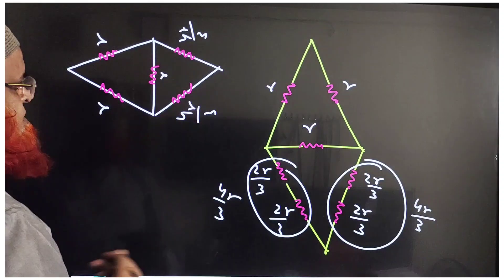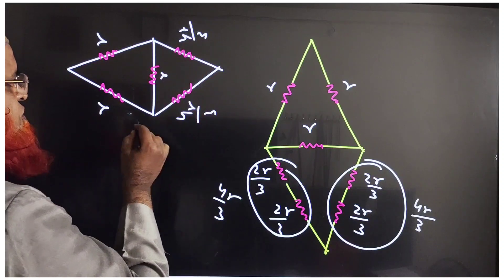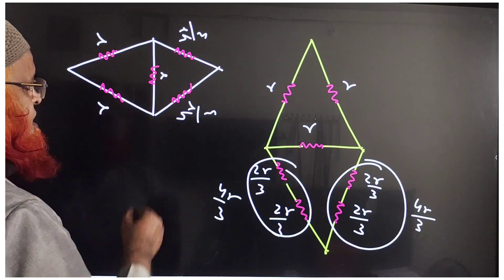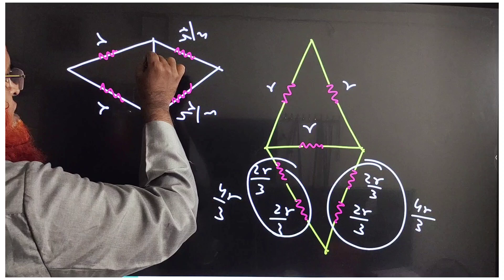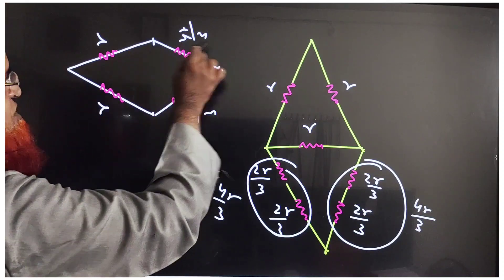Now is it not just like a Wheatstone bridge? Yes, p by q equals r by s: 4r by 3 divided by 4r by 3 equals r divided by r. Therefore, as this is a Wheatstone bridge, in the middle there is no current passing, so we can remove this part of the bridge. Now r plus 4r by 3 plus r are in series, so this is going to be 7r by 3.